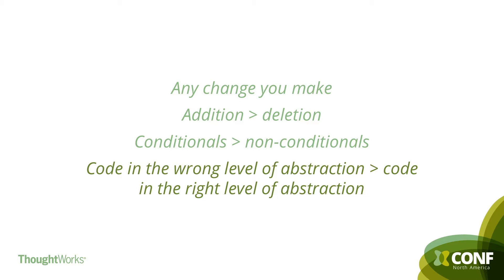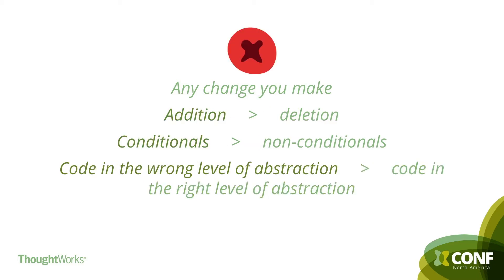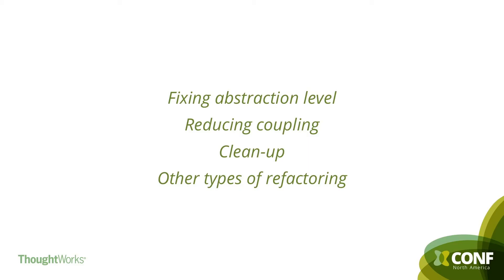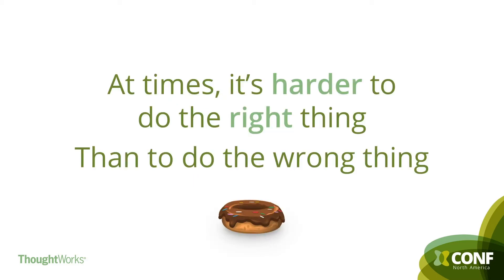I'm generalizing a lot here, but these are generally the things I think are wrong, or the things that you don't want to have too much of, because they will prevent you from sustainably delivering business value. Now, let's flip this and quickly look at things that would decrease complexity — things like refactoring and fixing abstraction level. These are things that you want people to do, because they help keep complexity in control. But at times it is harder to do the right thing than to do the wrong thing.